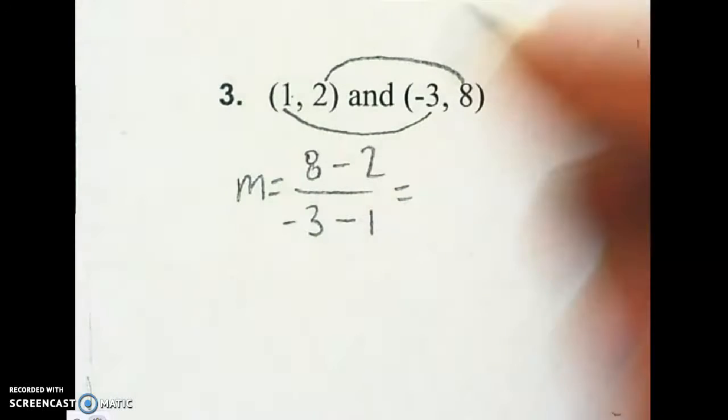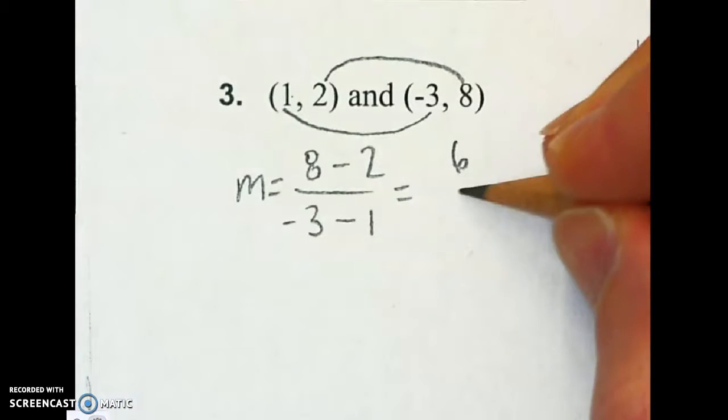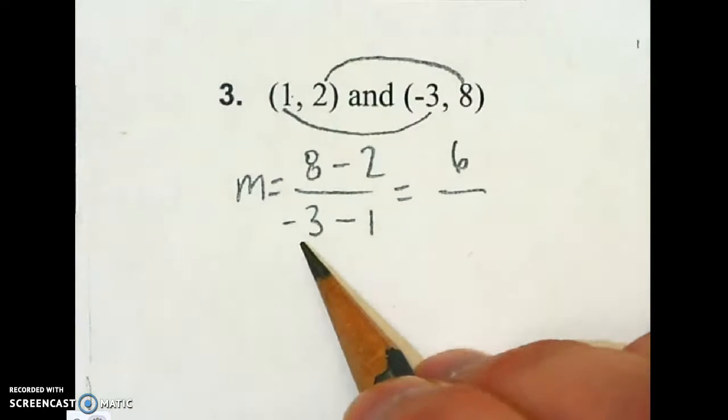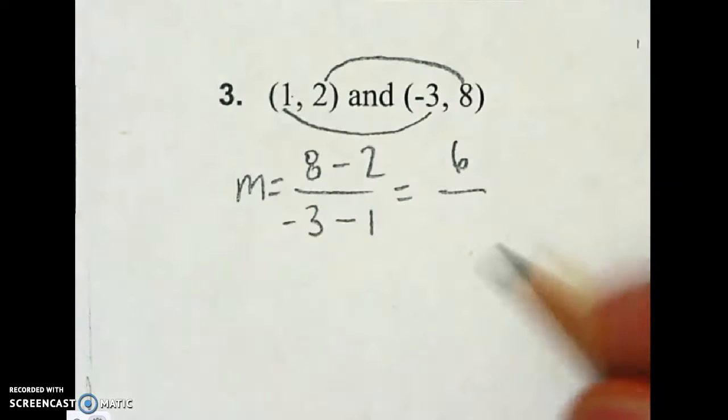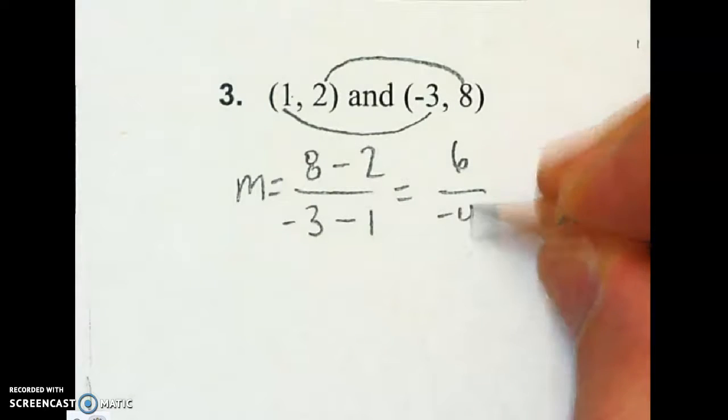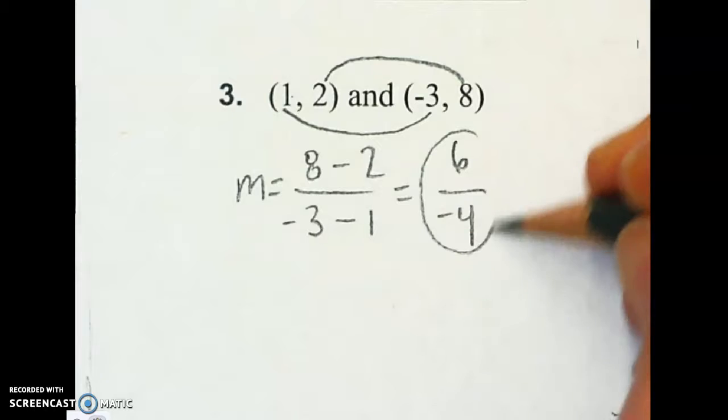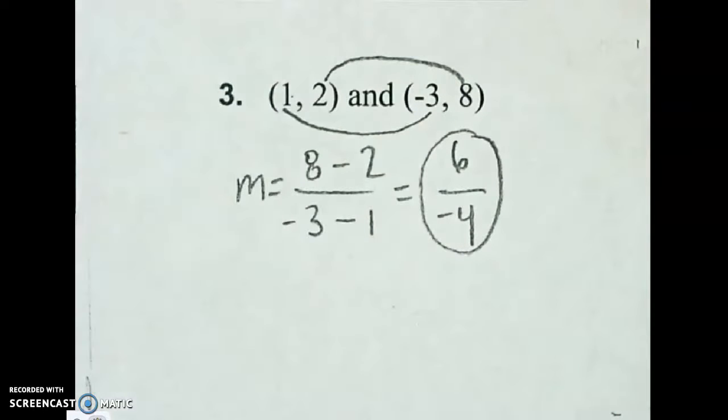Alright. Let's subtract. 8 minus 2 on the top, we get a 6. And on the bottom, if I have a negative minus a number, it's going to be even more negative. So negative 4. And that's it. Right there. Yes! Over and out.